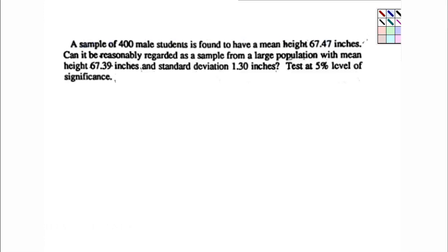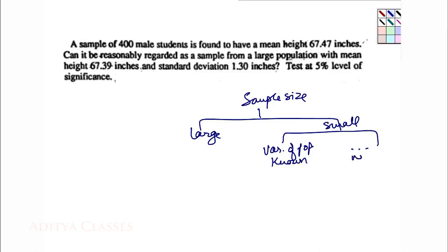let us recall what was our tiny little table about sample size. Sample size large and sample size small. Then in small, variance of population known or not known. This is a very simple chart. By large I mean n is more than 30. By small I mean n is less than 30.